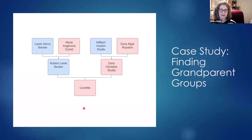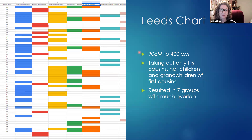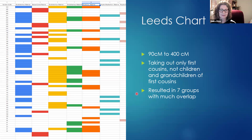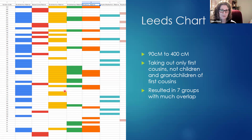In my first attempt at doing a Leeds chart, I used the recommended 90 to 400 centimorgan parameters. I took out the first cousins, but I neglected to take out their children and grandchildren. What happened was this resulted in seven groups instead of those four groups, and there was a lot of overlap — especially on her maternal side, where many people were sharing with multiple groups. This clearly was not working well.